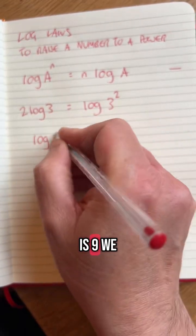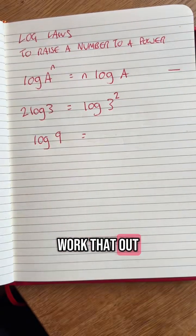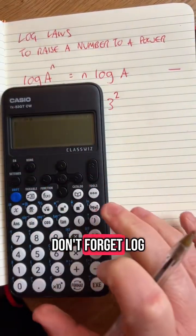So 3 squared is 9. If you work that out on calculator, don't forget log on this calculator is log base 10.